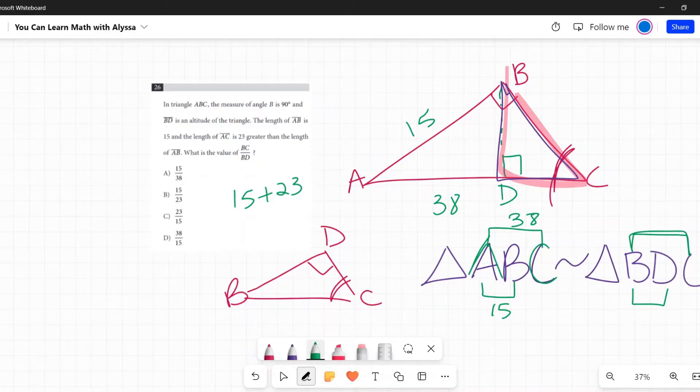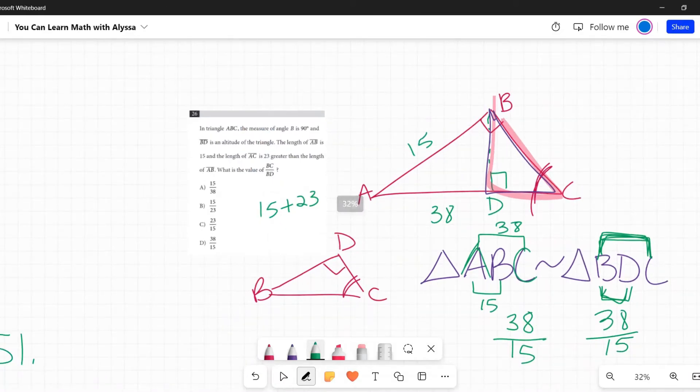So this triangle over here, the first to the last letter is 38 over the first to the second letter 15. So over here, same proportion, first to the last would be 38, first to the second would be 15. So there's no calculating required, that's it. Our answer is D, 38 over 15.